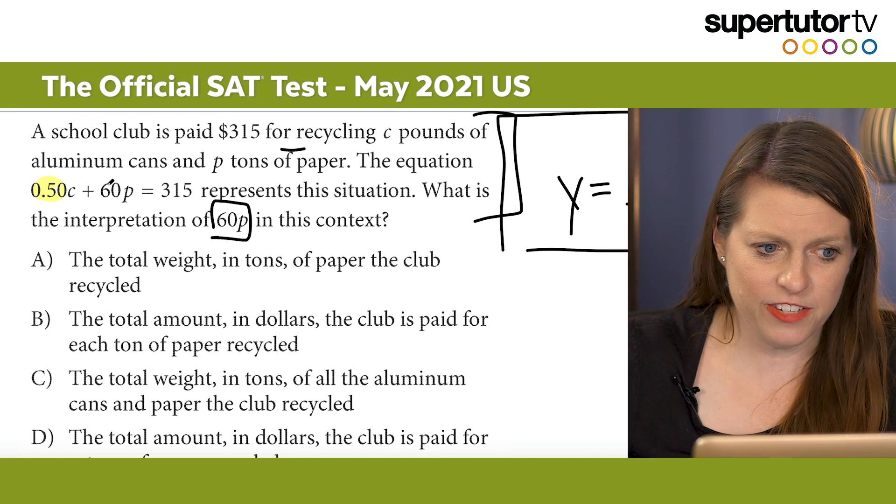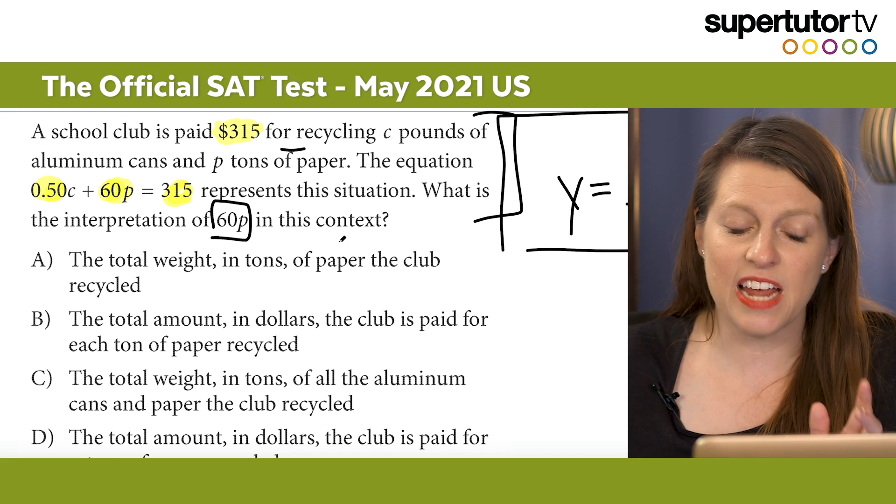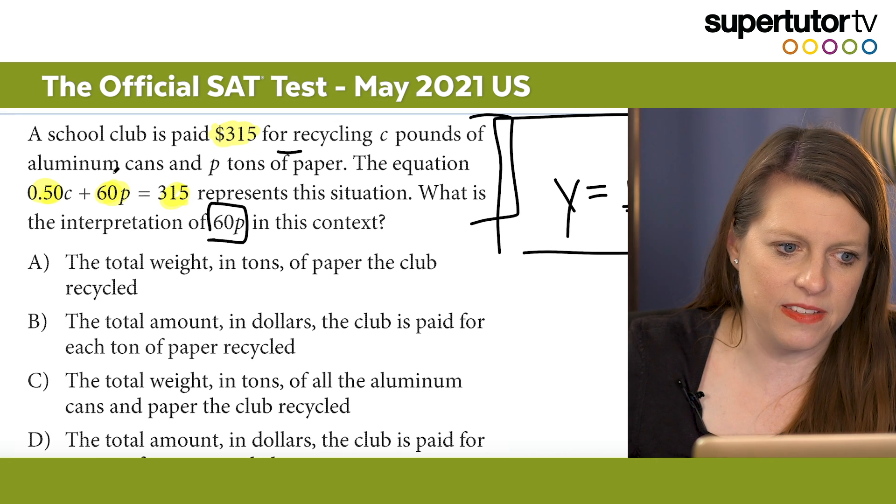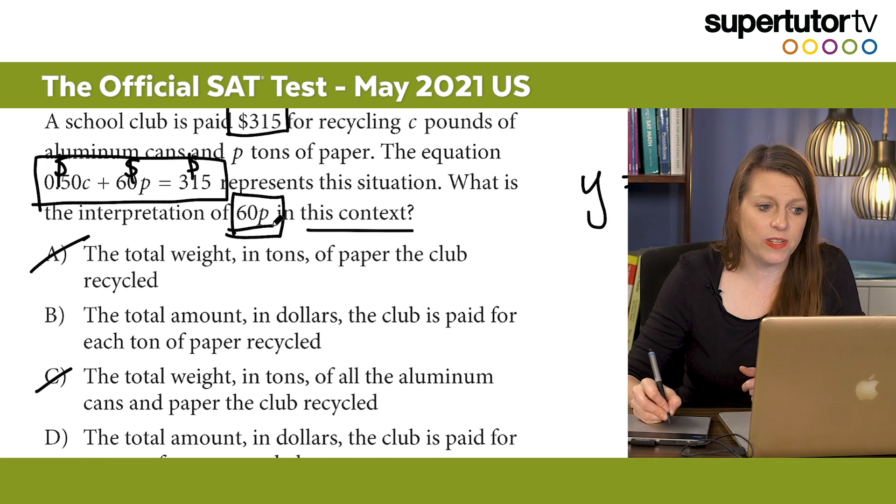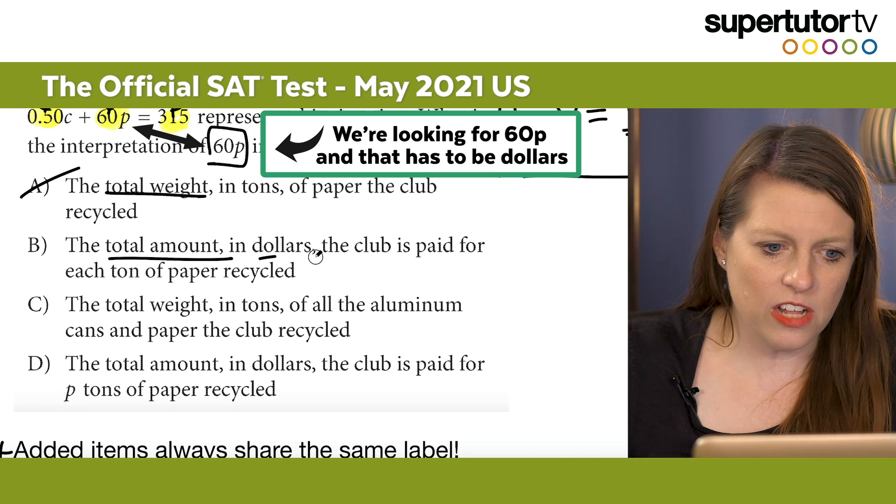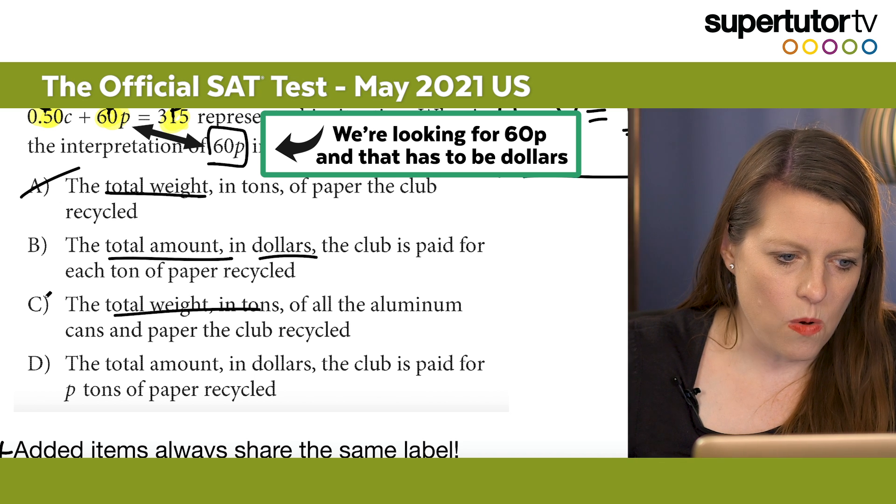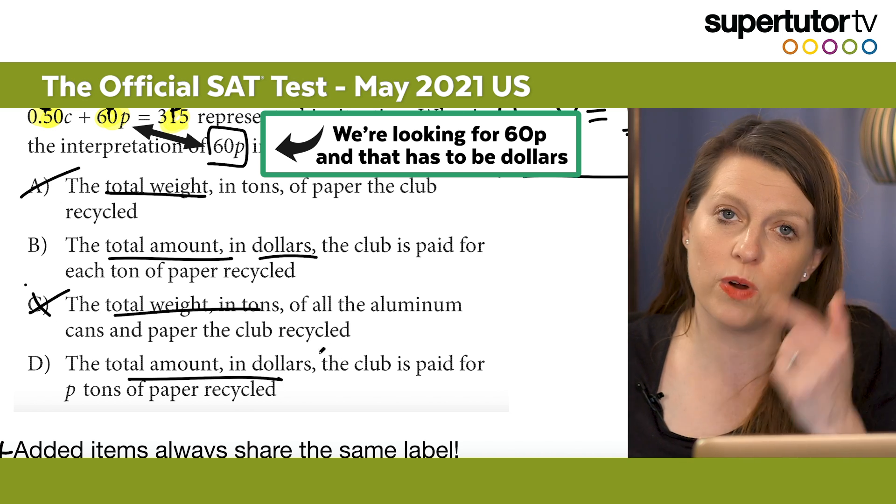We have a school club has paid $315 for recycling c pounds of aluminum cans and p tons of paper. The equation 0.5c plus 60p equals 315 represents the situation. What is the interpretation of 60p in this context? So here's my first tip. Added items always share the same label. So here's what that means in this context. This chunk, this chunk, and this chunk are all going to have the same label. Up here really fast, really easy, I know this is dollars. So guess what that means? That means this is dollars and this is dollars and this is dollars. I'm going to try to figure out 60p. Instantly I can look down weight, no. Amount in dollars, yes. Weight, no. Amount in dollars, yes. So this is really fast, but we're going to go a step deeper.